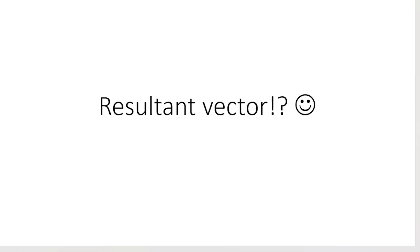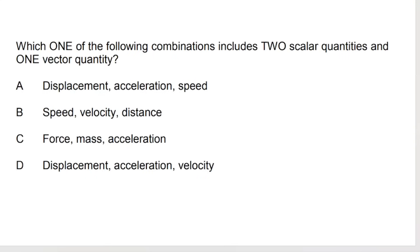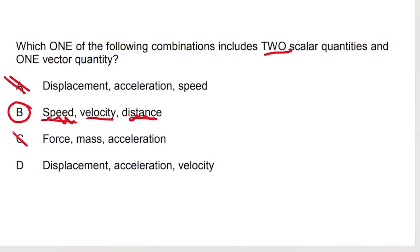In the next video we will look at what a resultant vector is and how to calculate it. But first, let's do two past paper questions. Which one of the following combinations includes two scalar quantities and one vector quantity? By elimination: option A has displacement and acceleration — both vectors, so it's incorrect. Option B has speed (scalar), velocity (vector), and distance (scalar) — two scalars and one vector. That matches. Option C has two vectors; option D has all vectors.